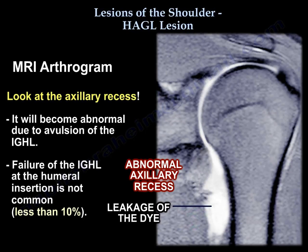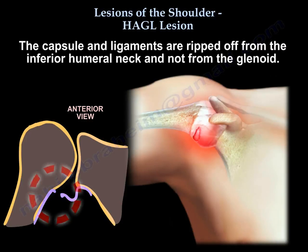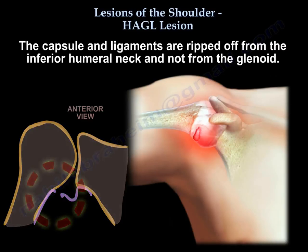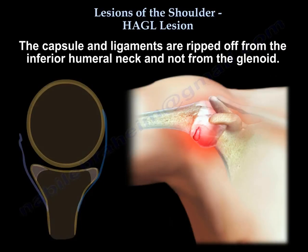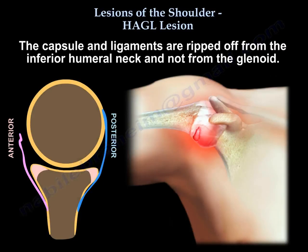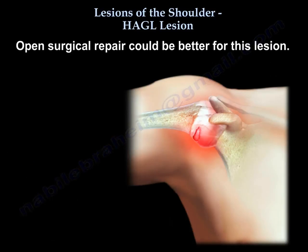Failure of that ligament at the humeral insertion is not common — in fact, it is less than 10%. The capsule and the ligament are ripped off from the inferior humeral neck, not from the glenoid. Open surgical repair could be better for this lesion.